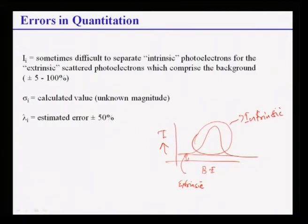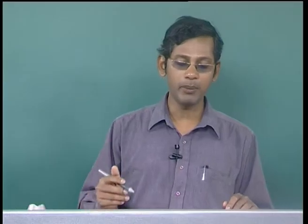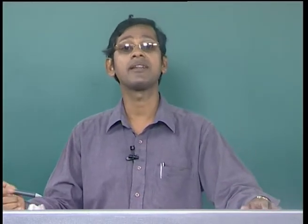A second source of error comes from sigma_i, which is normally calculated from the universal curve (master plot) I have shown you. The error magnitude is unknown in most cases. Lastly, error can come from the lambda_i estimated values. Lambda_i is calculated from the master plot universal curve, and if there is a small error in measuring lambda_i it can lead to errors in the calculation of compositions. Sigma_i error is of unknown magnitude, so we cannot really predict it, but lambda_i can be calculated quite precisely. After giving you some idea about quantification, let me discuss some other very important issues of XPS.